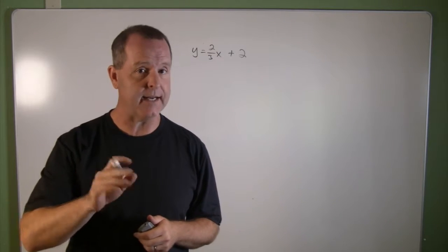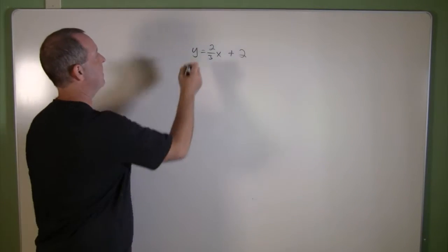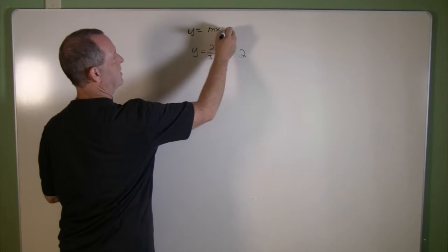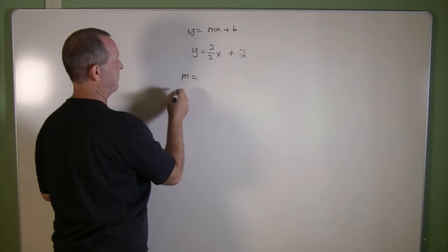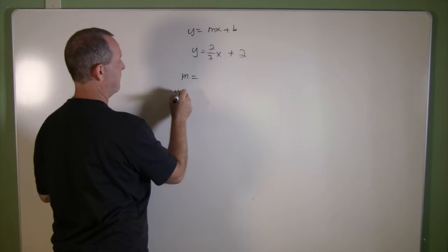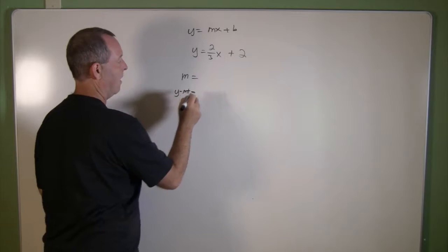So the first thing I need to identify is, is it in the form y equals mx plus b, where m and this y-intercept, or what we call b, are identified?